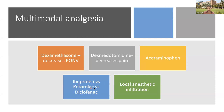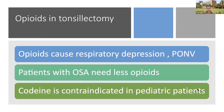Regarding NSAIDs — ibuprofen, ketorolac, or diclofenac — earlier there was a concept that NSAIDs increase bleeding by inhibiting platelets, but now evidence suggests NSAIDs generally do not increase bleeding and can be used. Local anesthetic infiltration of the tonsillar bed can also be used. Opioids can cause respiratory depression and PONV, which can be detrimental in children with OSA and lead to respiratory compromise. We try to provide opioid-sparing anesthesia in OSA children as much as possible.